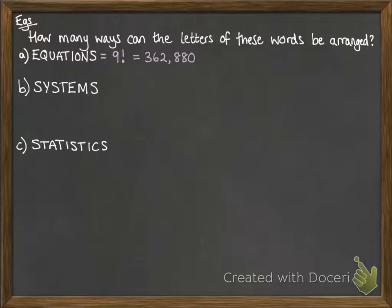Now with SYSTEMS, we have seven factorial for seven letters, but we need to divide by the repeats that we've got there. So those S's, we've got three of them, they could be arranged in three factorial ways. So they could be swapped around but still give us the same as what we've already seen. So we divide by that three factorial, and we get 840.